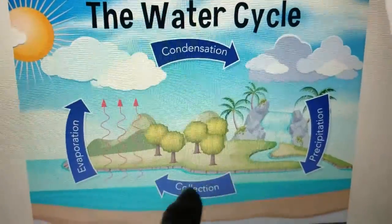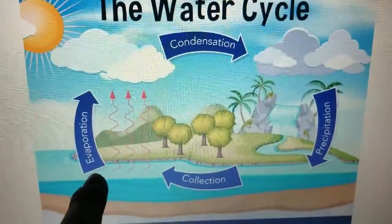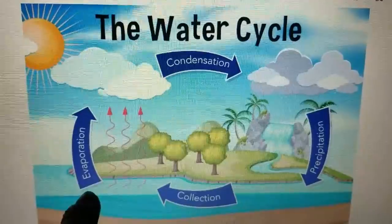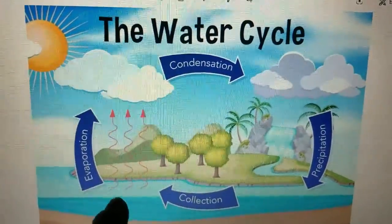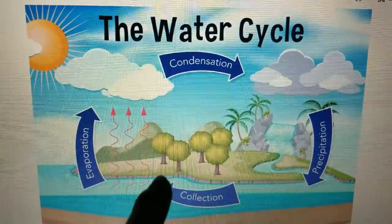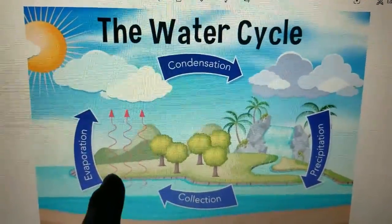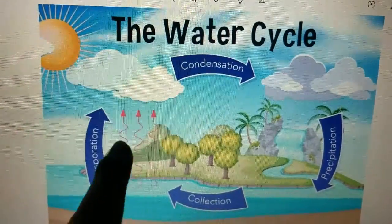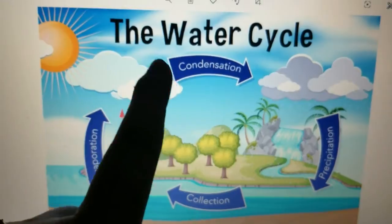It then moves into a phase of the water cycle called evaporation. Evaporation is when all of that collected water or snow heats up and turns into teeny tiny droplets — really small. You can't even see them, and they float on up into the sky to form clouds.